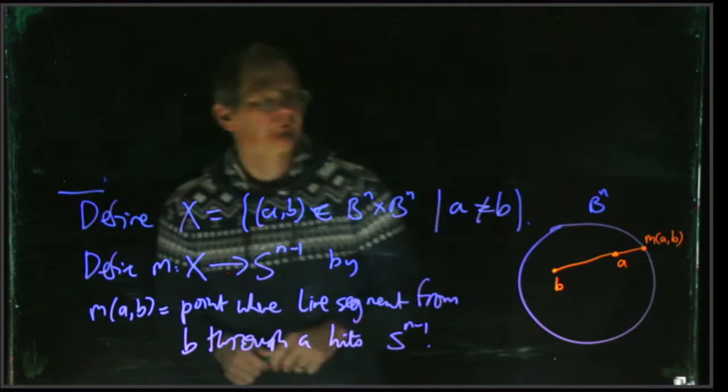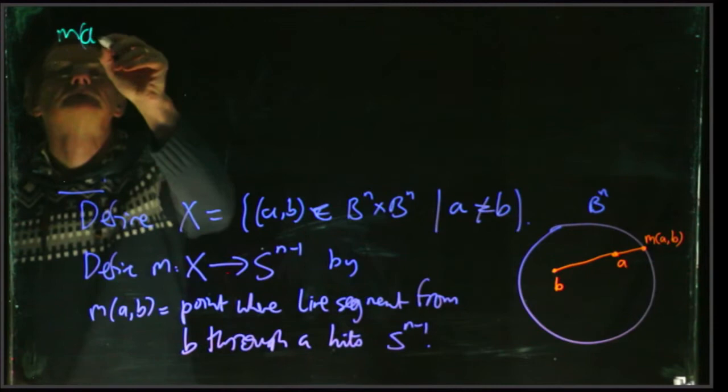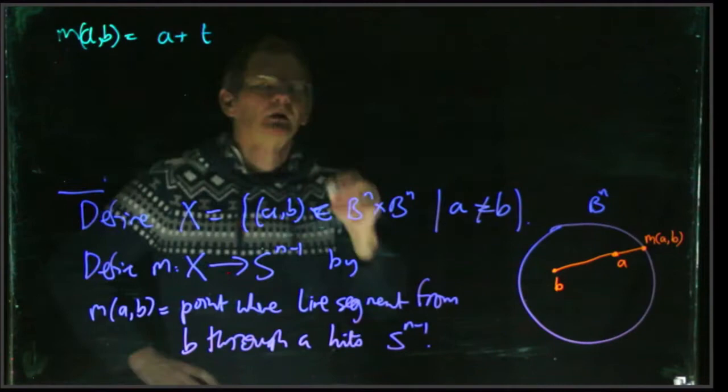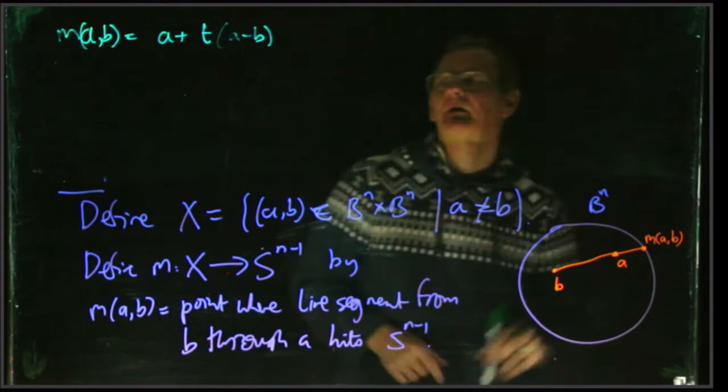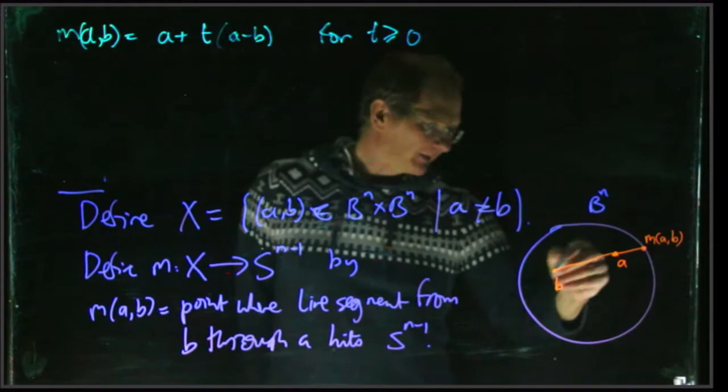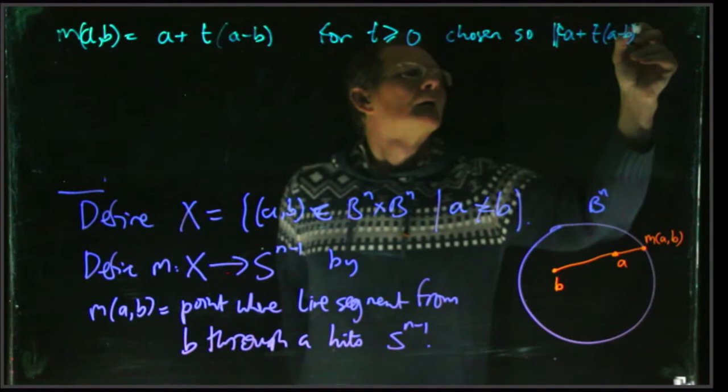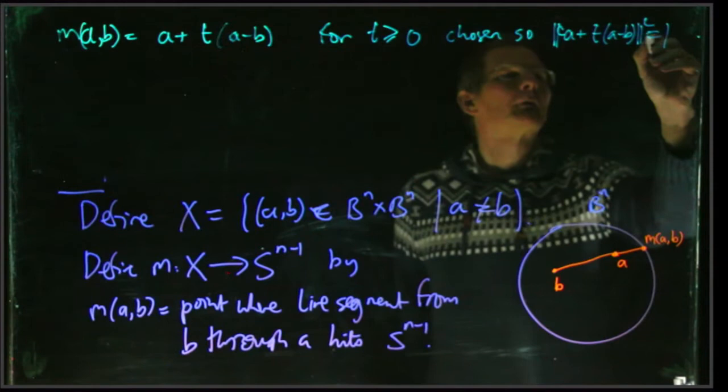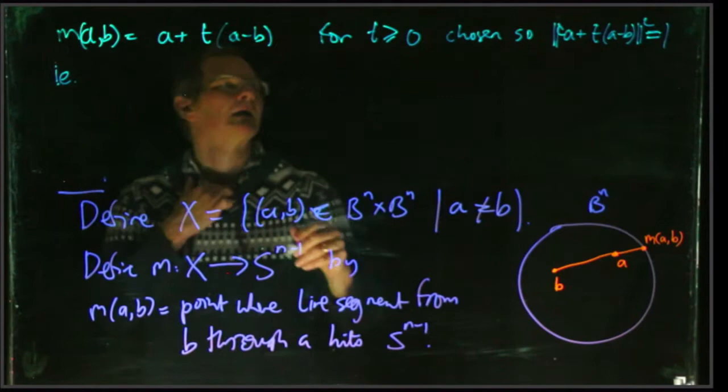So to prove m(a,b) is continuous, we'll just give a formula for it in terms of functions that are well known to be continuous. It's going to be a plus some positive multiple of the vector a minus b. We start at a, and then we carry on in the a minus b direction. t is going to be positive because we're moving out in this direction. And what's the value of t? It's determined by the fact that we're supposed to have a norm equal to 1. And we can just expand this out. It's going to give us a quadratic function for t.